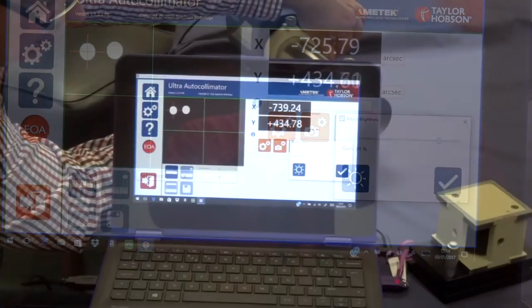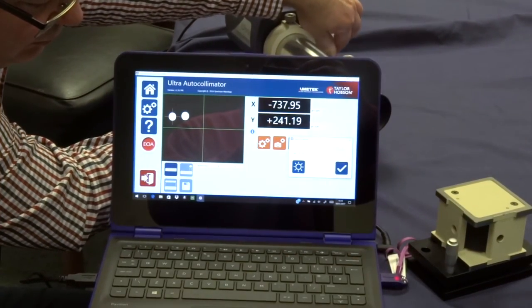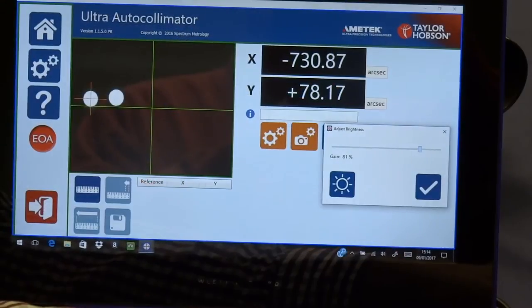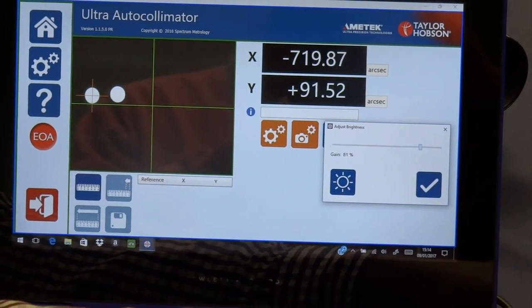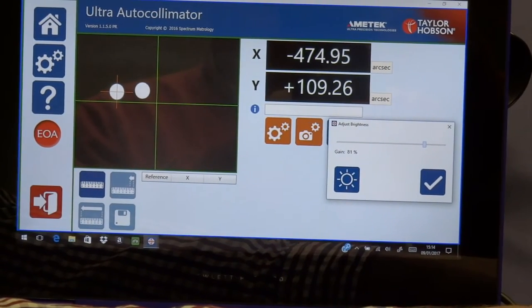We can take these visual images off the autocollimator screen by simply twisting the optical square. Remember, twisting the optical square does not affect the 90 degrees.